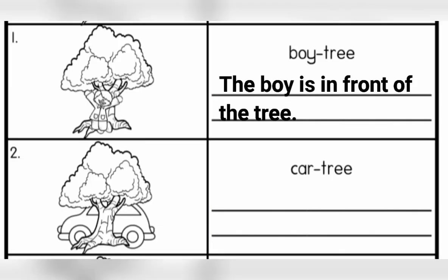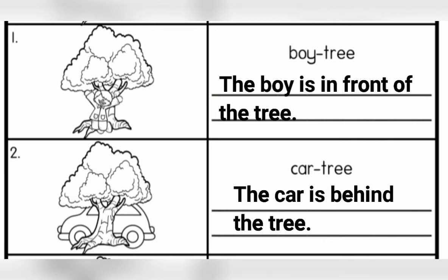Now we already have the answer for number one. Let's look at number two. For number two, we have car-tree. The sentence will be: the car is behind the tree.